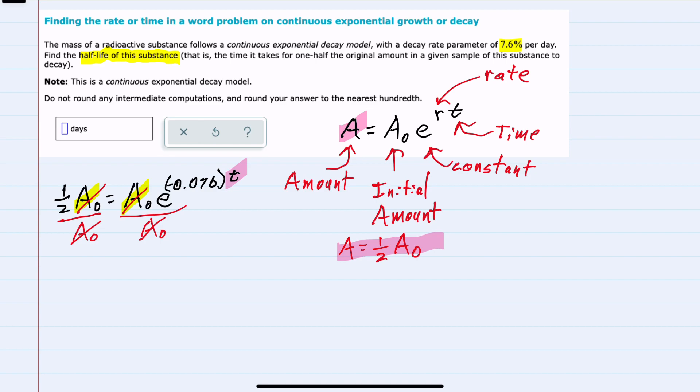We can now simplify this expression as one half equals e to the negative 0.076t. And since the variable we are solving for is in the exponent, we can get it down by taking the logarithm of both sides.